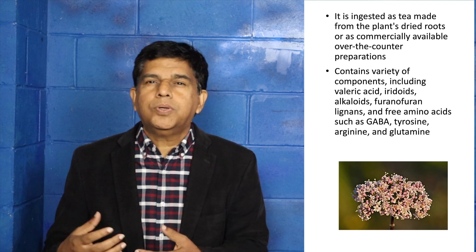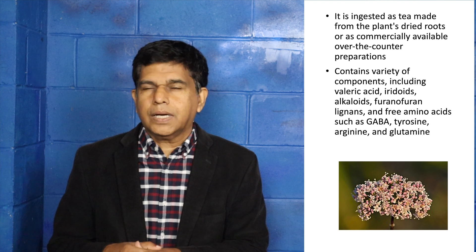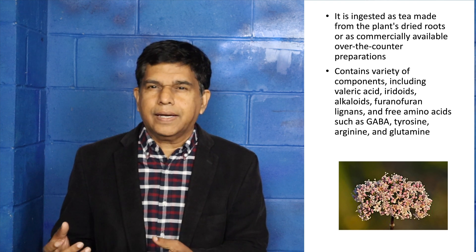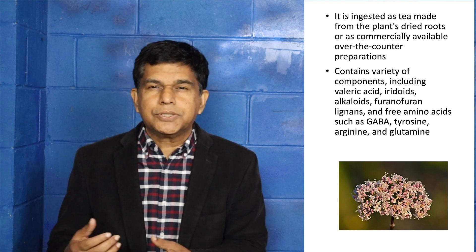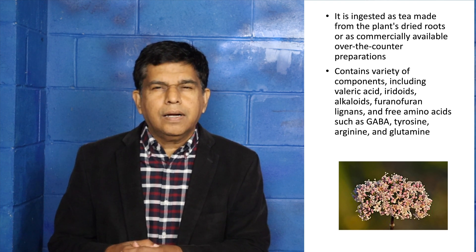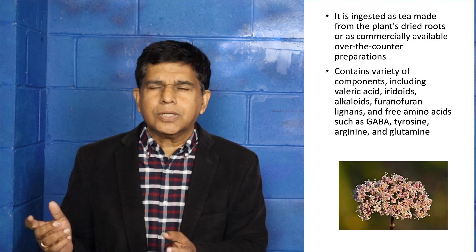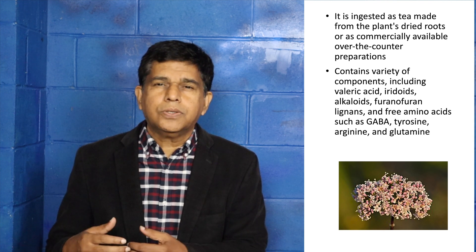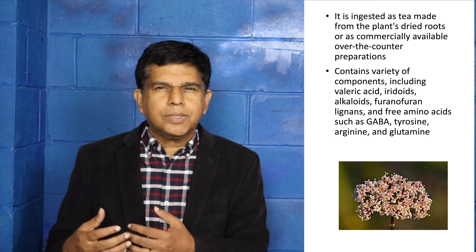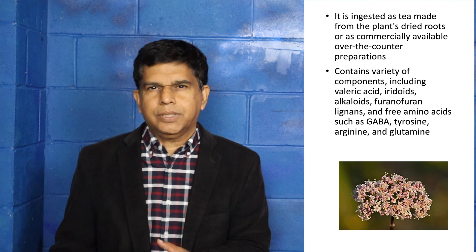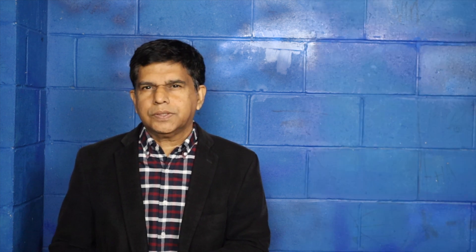Now let's look at the components of valerian root. You have valeric acid, alkaloids, iridoids, and amino acids like GABA, tyrosine, and glutamine. That's where the sedative effects pretty much come from.